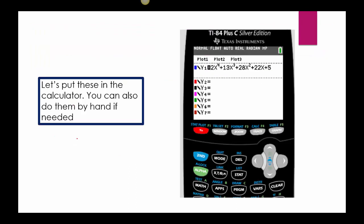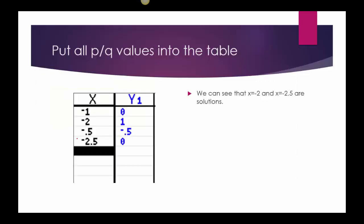First, tell the calculator what you want — give it the original function: 2x to the fourth plus 13x cubed plus 28x squared plus 22x plus 5. Then go back to the table and plug them in: negative 1, negative 5, negative 0.5 for negative one-half, and negative 2.5 for negative five-halves. What's important is I can see two zeros — at negative 1 and negative 2.5. So negative 1 and negative 2.5 are solutions to my function.